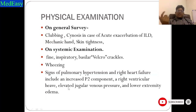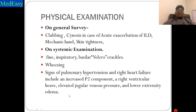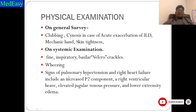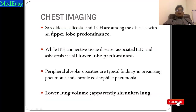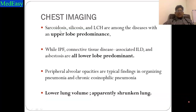On systemic examination, fine inspiratory bibasilar Velcro crackles are typically seen in idiopathic pulmonary fibrosis. Signs of pulmonary hypertension or right heart failure develop over time in patients with long-standing ILD. On chest imaging, some ILDs have specific lobe predominance: sarcoidosis, silicosis, and LCH are upper lobe predominant, while IPF, connective tissue disease-associated ILD, and asbestosis are all lower lobe predominant.